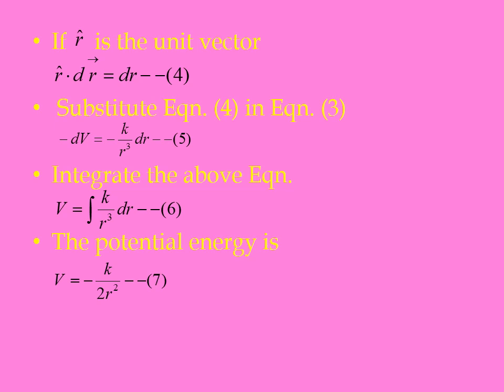R cap dot dr vector is nothing but dr. So now you substitute this in equation 3. The equation 3 becomes minus dV equals minus k by r cube into dr.